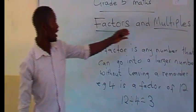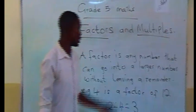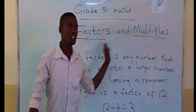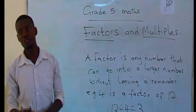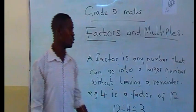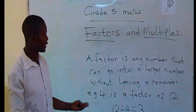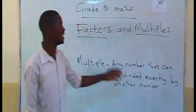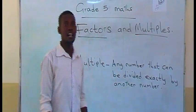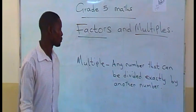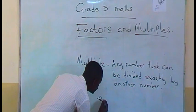Going on to another term — multiple. We don't have to mix up these two terms: factors and multiples. These two terms normally confuse learners, where they think multiples are the same as factors. A multiple is any number that can be divided exactly by another number — that is a multiple.